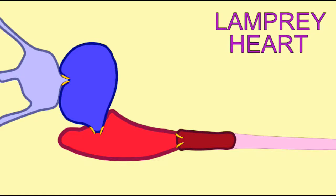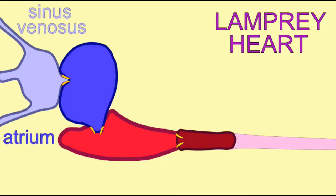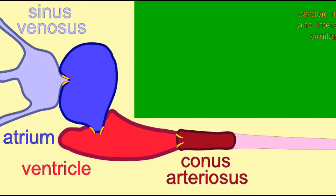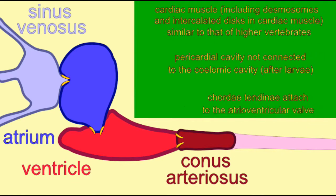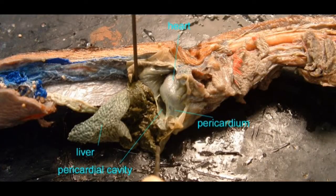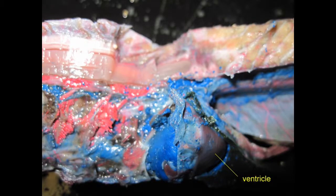The hearts of lampreys have a few more traits in common with higher vertebrates, which hagfish lack, such as the ending of the connection between the pericardial cavity and the peritoneal cavity after development, and the beginnings of a fourth heart chamber of the conus arteriosus.